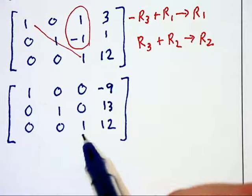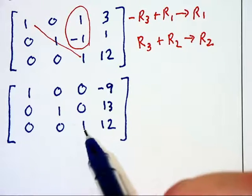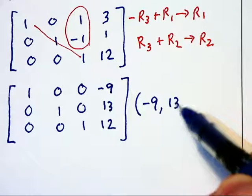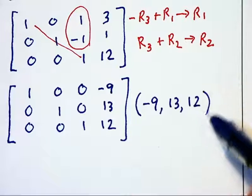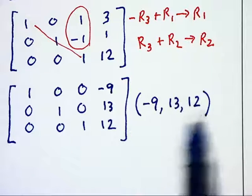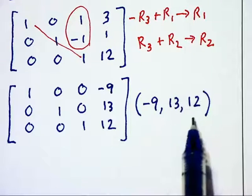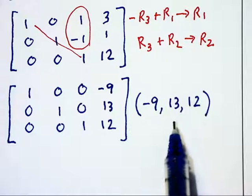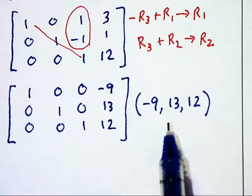And now, since we've got our identity matrix, or this column of ones on the left, we now can write the solution set as (-9, 13, 12). And you can check your work by substituting this coordinate point into all three equations, and verify that this indeed is the solution set.